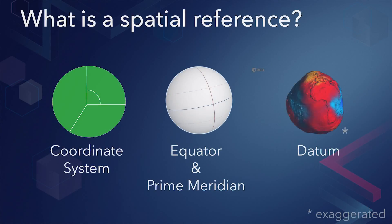Understanding spatial references is critical to your success in using ArcGIS Runtime. A spatial reference determines how a coordinate, or XY point, maps to a physical location on Earth by defining a coordinate system, a prime meridian, and a datum.